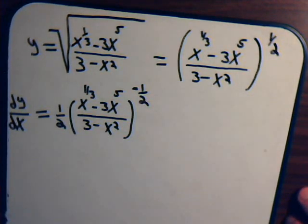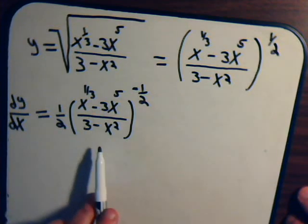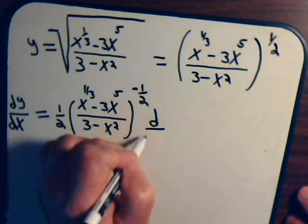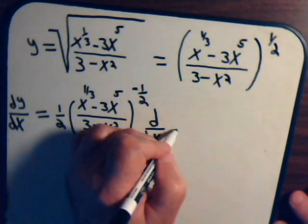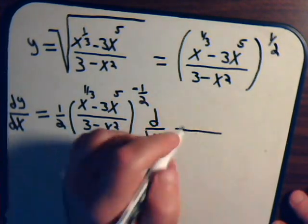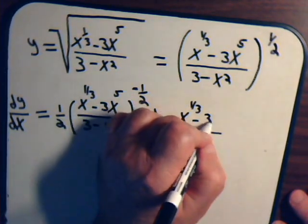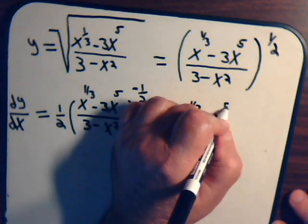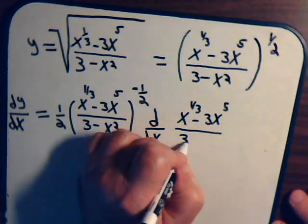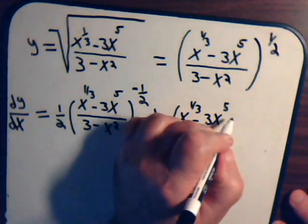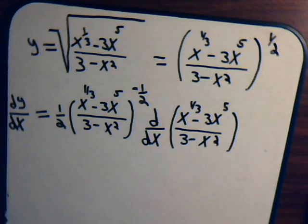And now this is times the derivative of what is inside these brackets. So we have d/dx of x to the 1/3rd minus 3x to the 5th divided by 3 minus x squared. Here we have to take the derivative of this quotient.